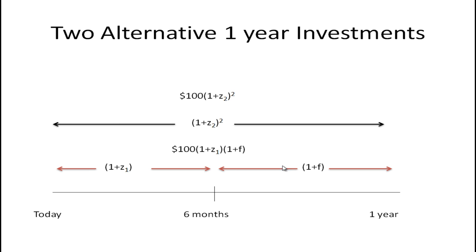On the other hand if you invested in two six-month investments you would get the six-month rate for the first six months and then you would get this forward rate for the following six months. So in the end you're still investing for one year but in this case you're investing in two instruments, here you're investing in only one.